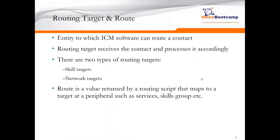There are two types of routing targets: a skills target and the network target. A route is a value returned by the script that maps to a target at a peripheral, such as a service or skills group. Think of a route as a logical connection that bridges the call with a particular target.